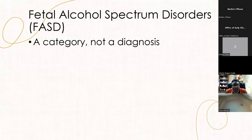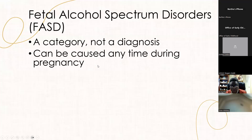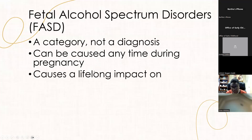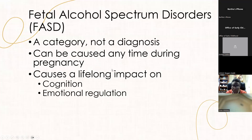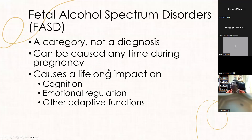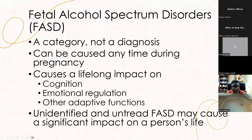This is called a neurodevelopmental disorder associated with prenatal alcohol exposure. There are several different diagnoses. These can be caused any time during pregnancy, from week one all the way to week 40 plus. It does not take much alcohol to cause one. It causes a lifelong impact on a variety of different cognitive processes, emotional and behavioral regulation, and other adaptive functions.